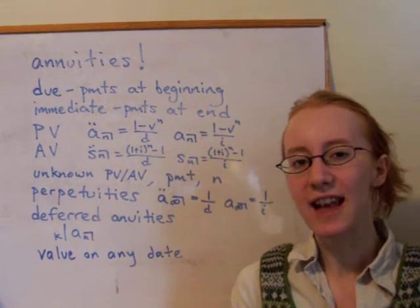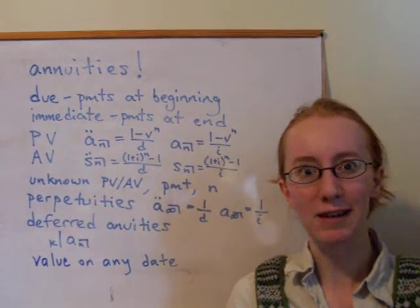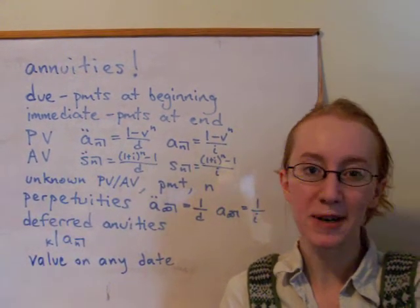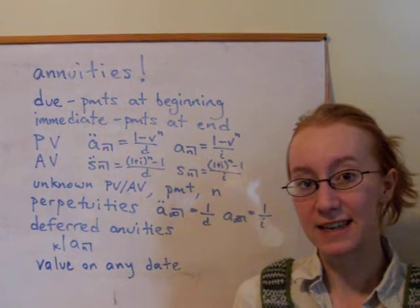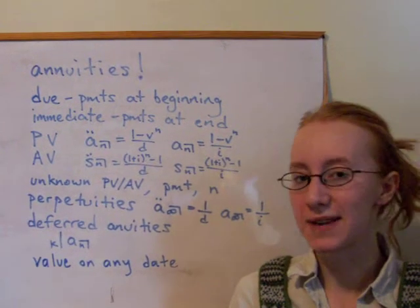And then finally looking at an unknown number of payments. And that's where it gets a little bit complicated, because it's never going to work out to be an exact number of payments. There's going to be a little bit extra that you have to put in at the end, an additional contribution. So you always solve for n first, the number of payments, round it down, and then figure out what that additional payment is going to have to be.